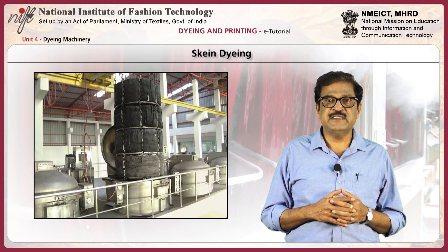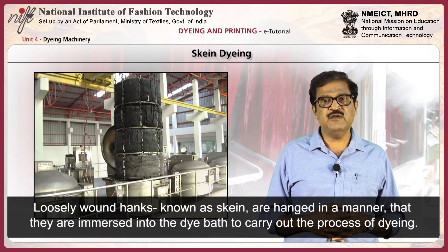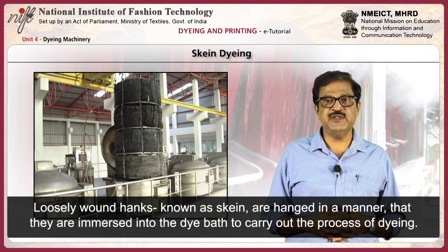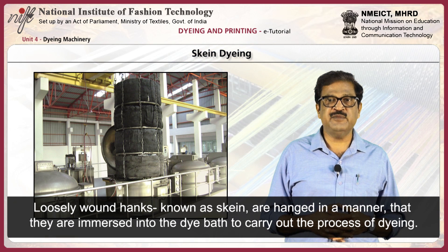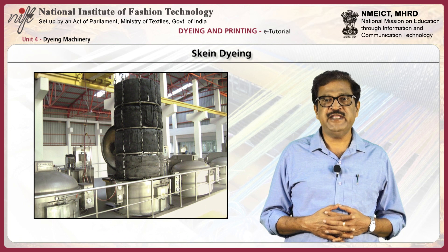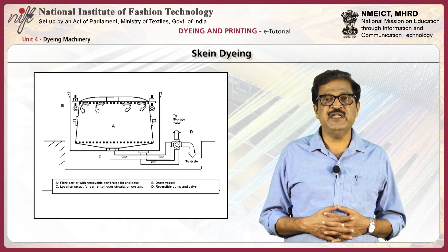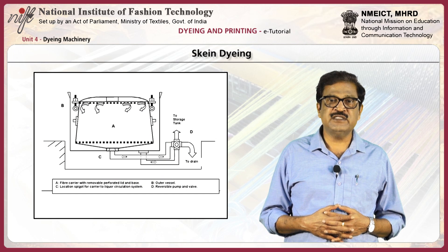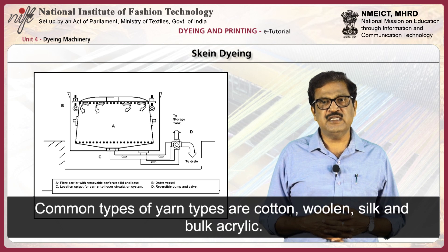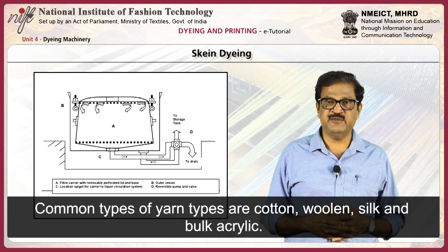We will discuss about skein dyeing. Loosely wound hanks, known as skeins, are hung in a manner that they are immersed into the dye bath to carry out the process of dyeing. This process is usually used to dye yarns which require full bulk. Such yarns are commonly used to prepare knits or carpets. Cotton, woolen, silk, and bulk acrylic are the common yarn types used in skein dyeing.